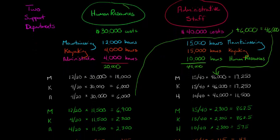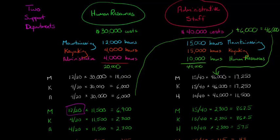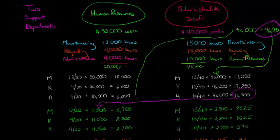Now because HR has $11,500, we have to allocate that again using the same formula. Mountaineering gets 12/20 of $11,500. Admin staff, which we brought from $46,000 down to zero after allocating it out, now receives a portion back: 4/20ths times $11,500 equals $2,300 going back to admin staff. So we're going back and forth, but the numbers are getting smaller.